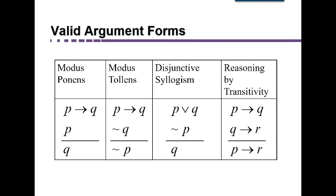And the common ones have names. This one, where P implies Q, and P, therefore Q, is called modus ponens.